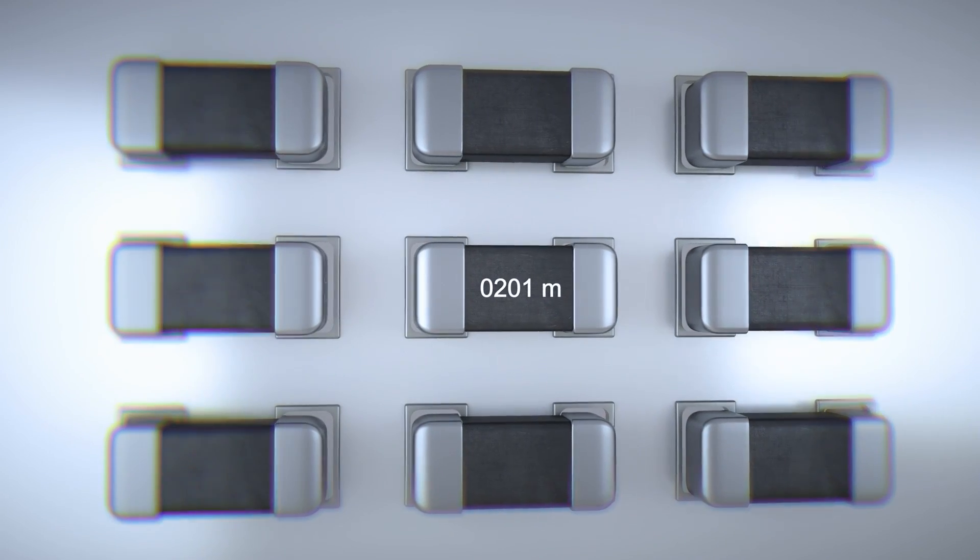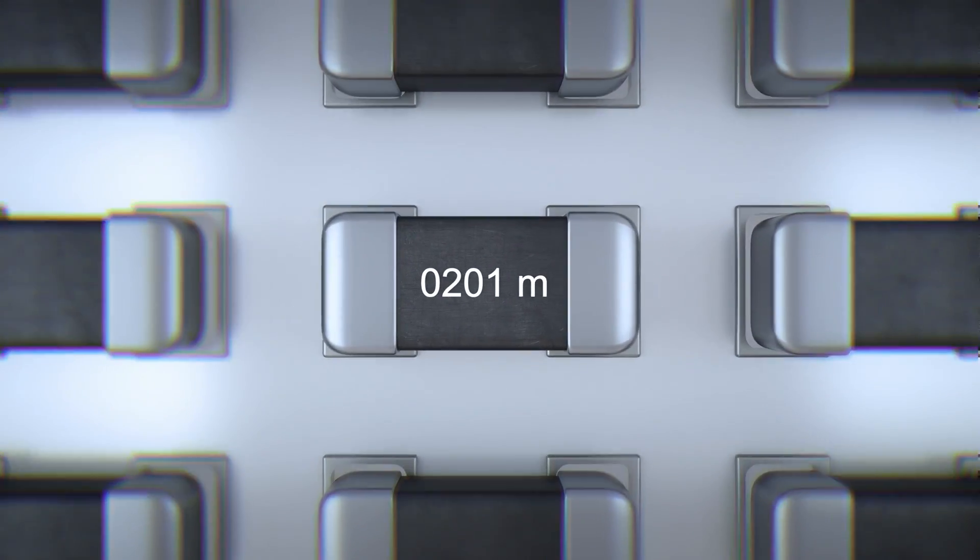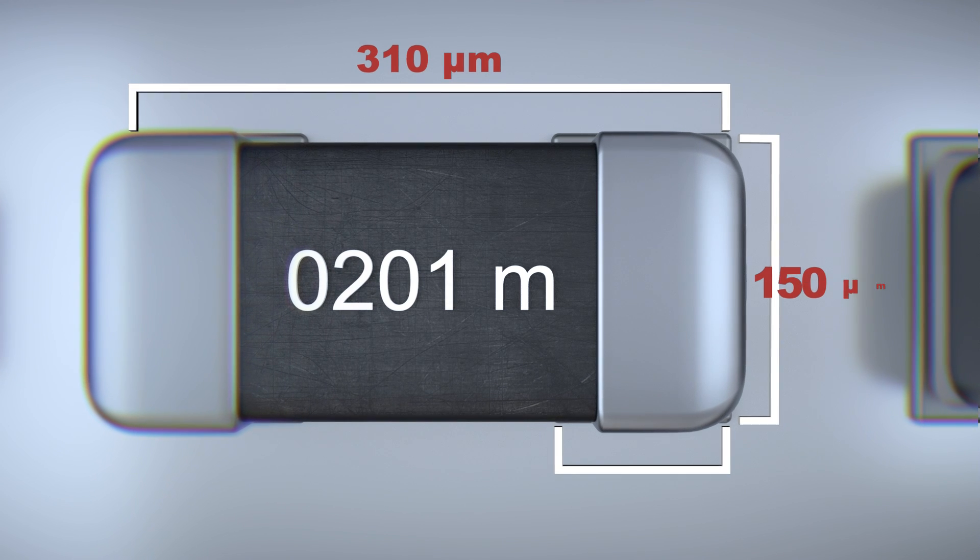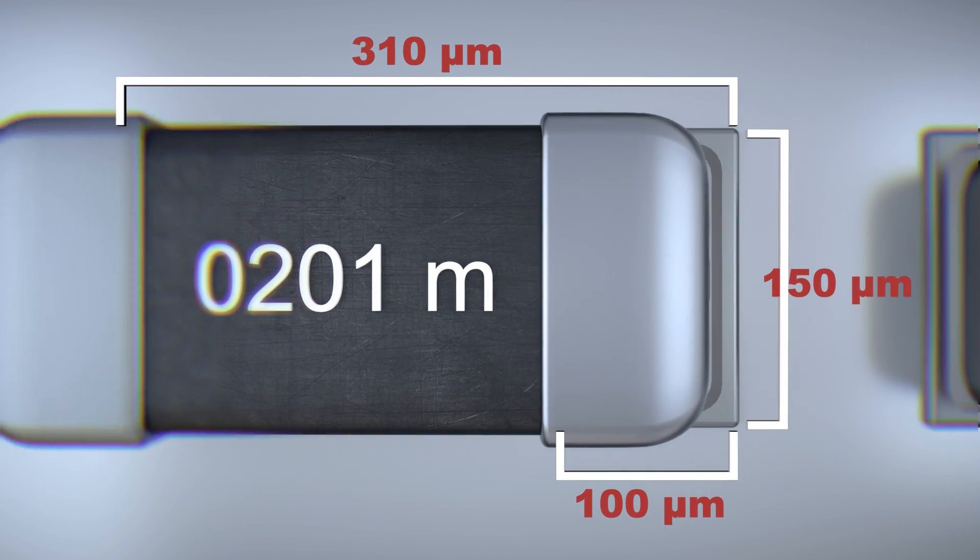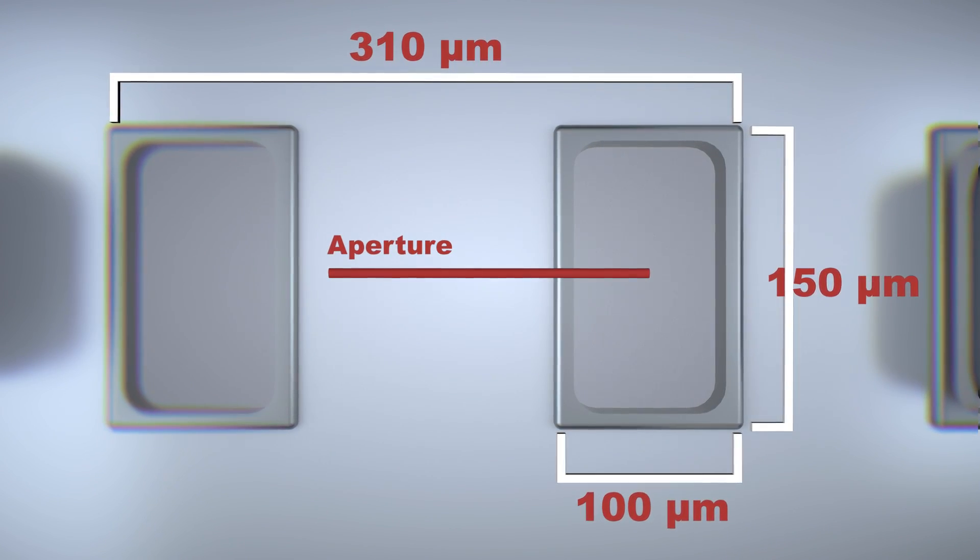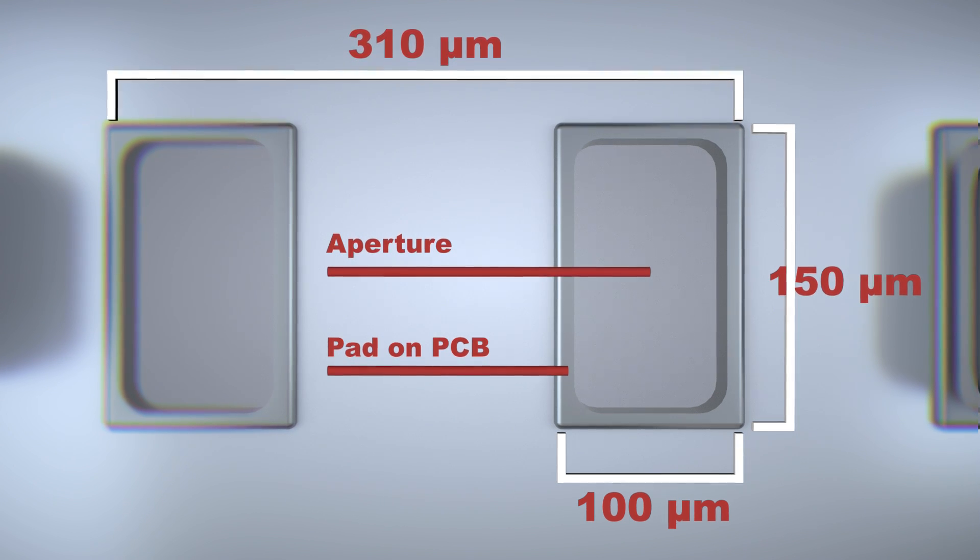Precise squeegee control for repeatable printing results is a standard feature, while special options for printing the smallest pads and other options that are critical for metric 0201 processes can be retrofitted at any time.